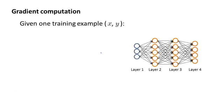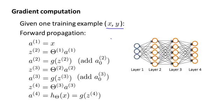Let's start by talking about the case of when we have only one training example. Imagine that our entire training set comprises only one training example, which is a pair x, y. And let's step through the sequence of calculations we would do with this one training example.